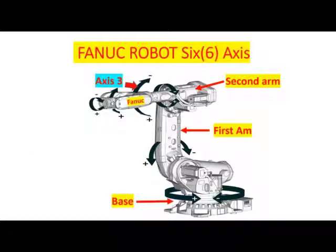Axis number 3 allows the second arm or upper arm to raise and lower and extend vertical reach.